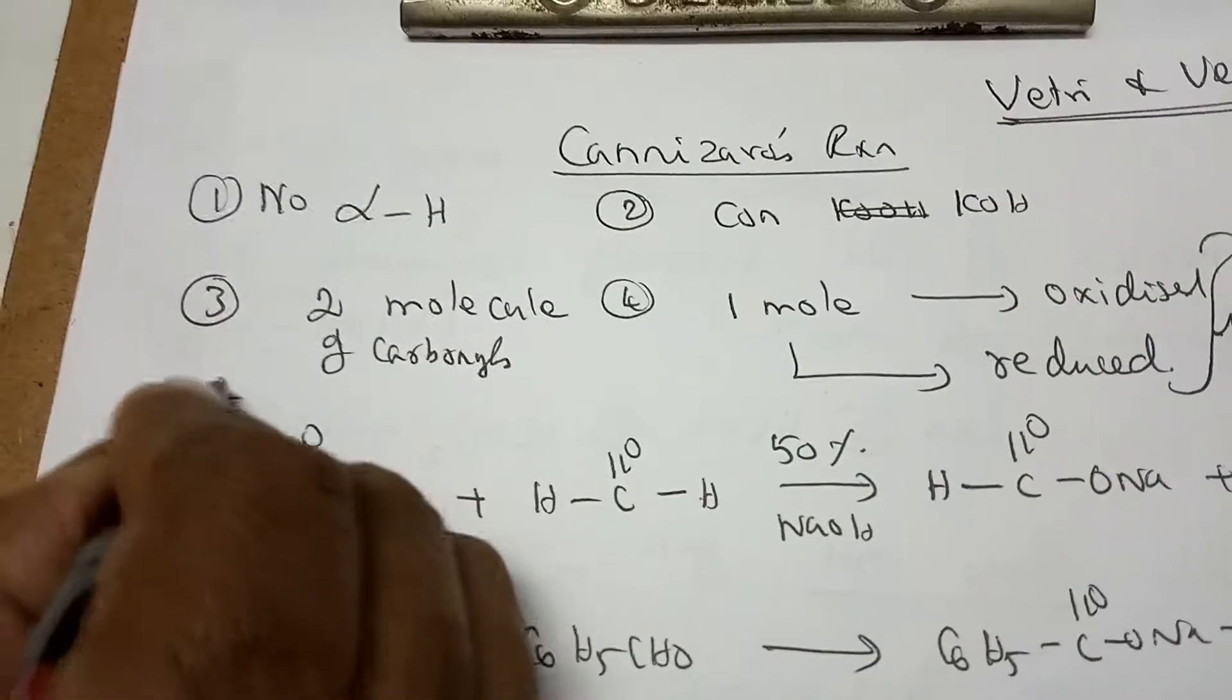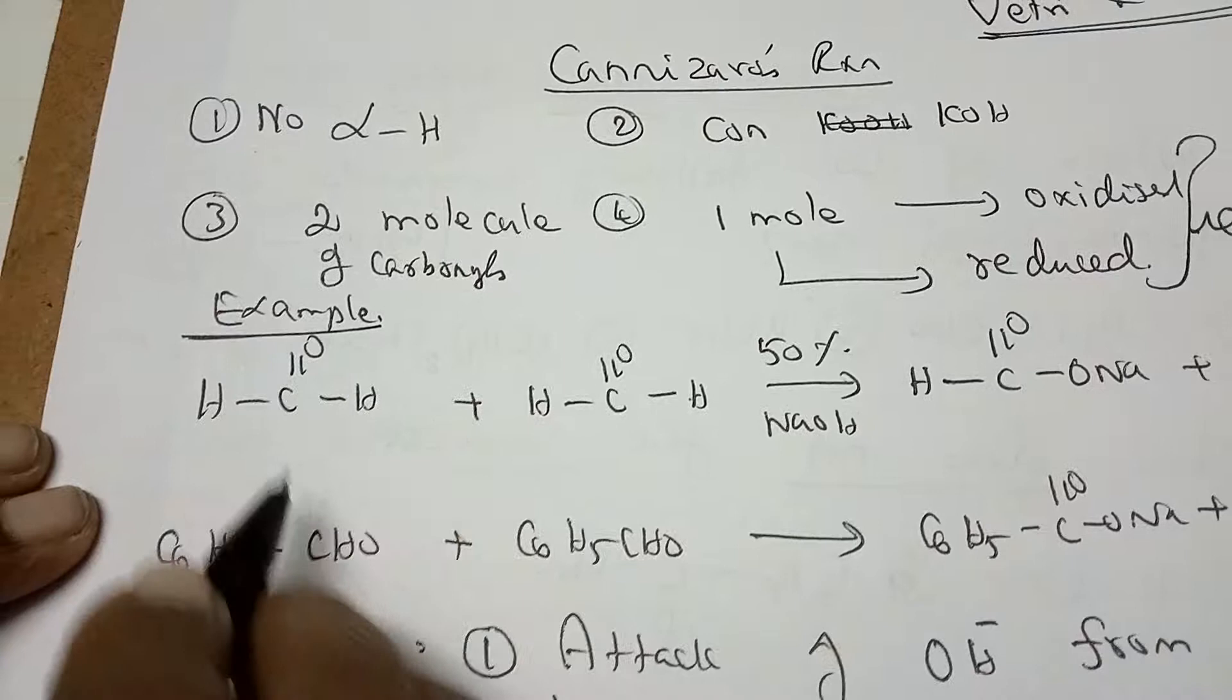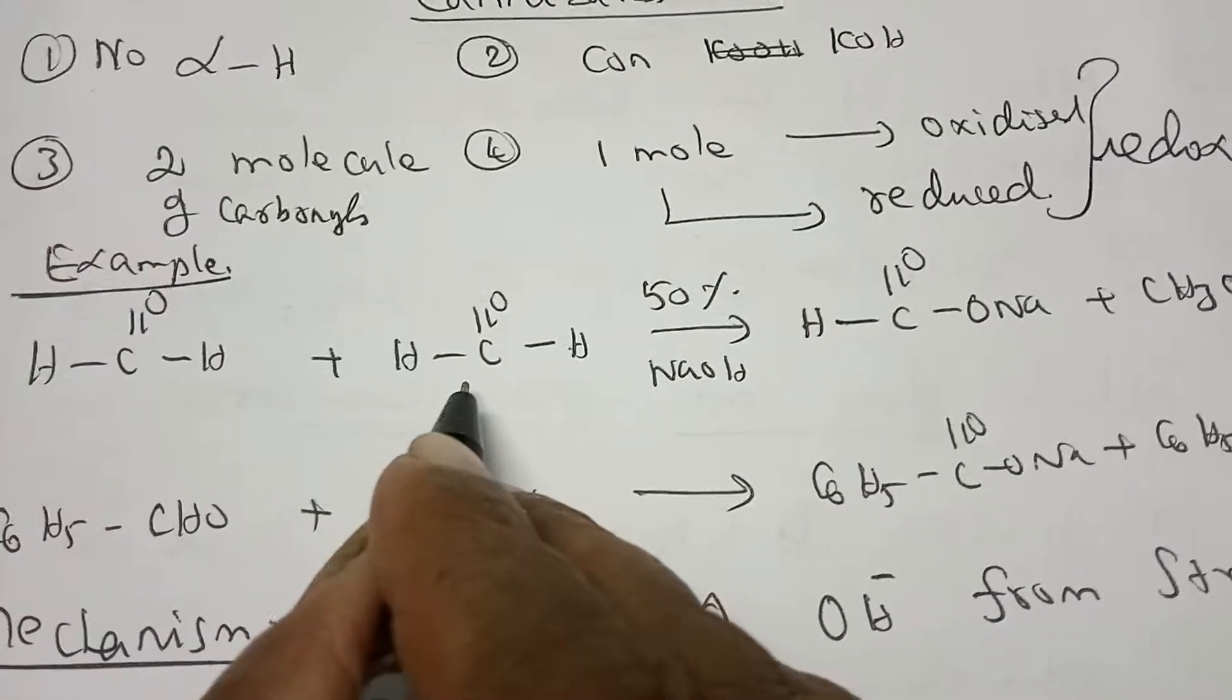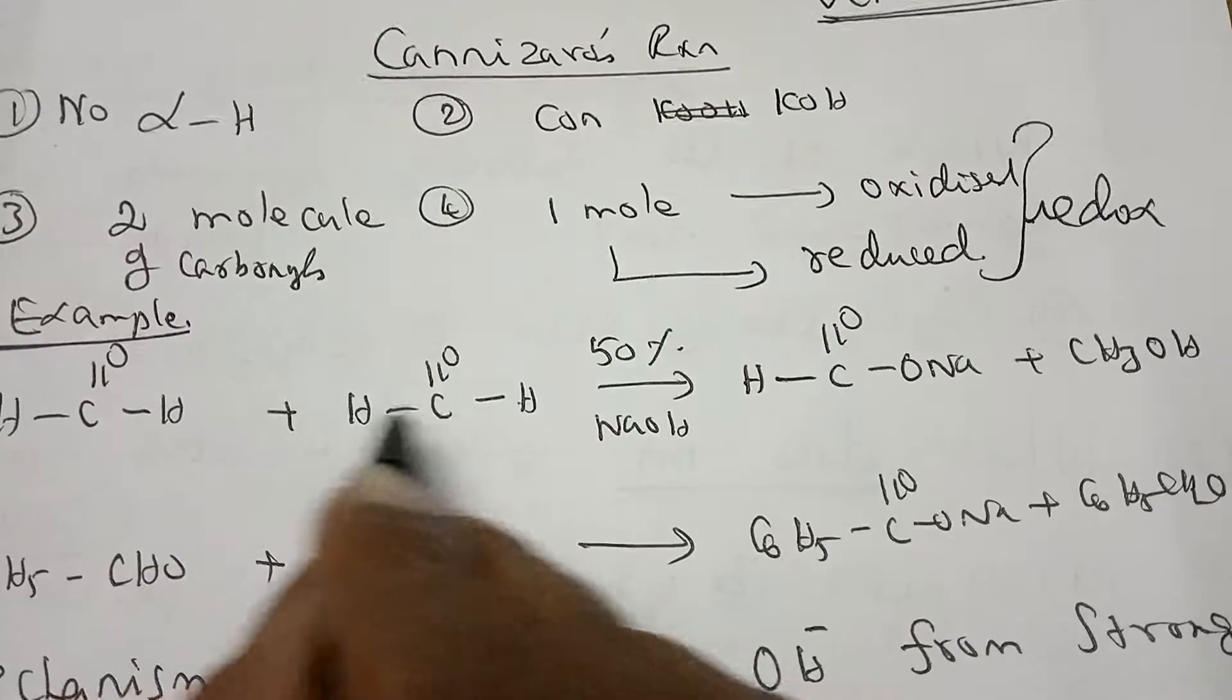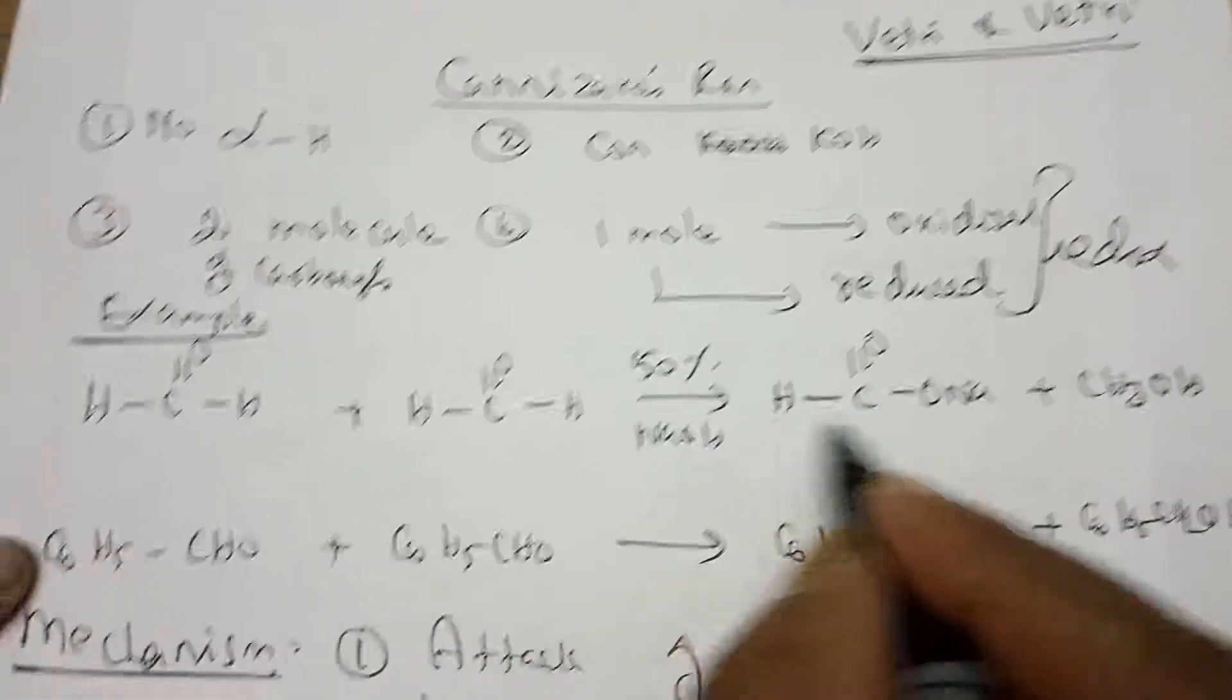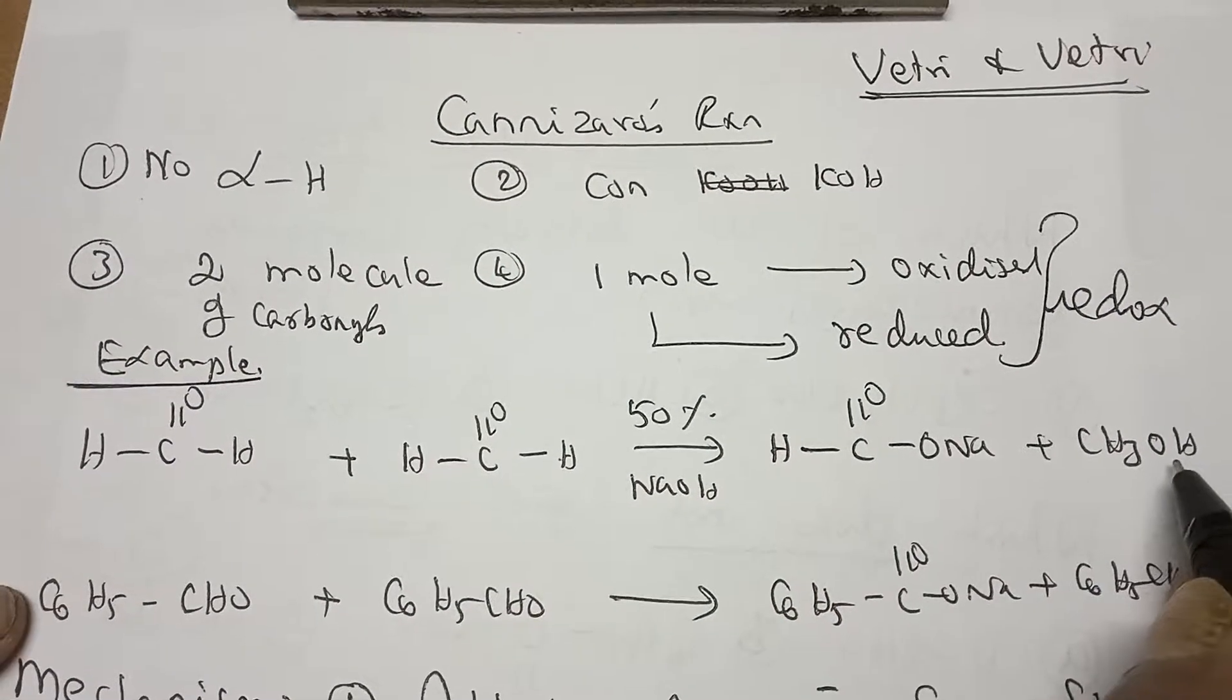Now let us see the example for your Cannizzaro reaction. Here it is given formaldehyde. Formaldehyde with formaldehyde, that is called as methanol. Two molecules of methanol in presence of 50% NaOH gives one product as oxidized product, sodium formate, and another is methyl alcohol.